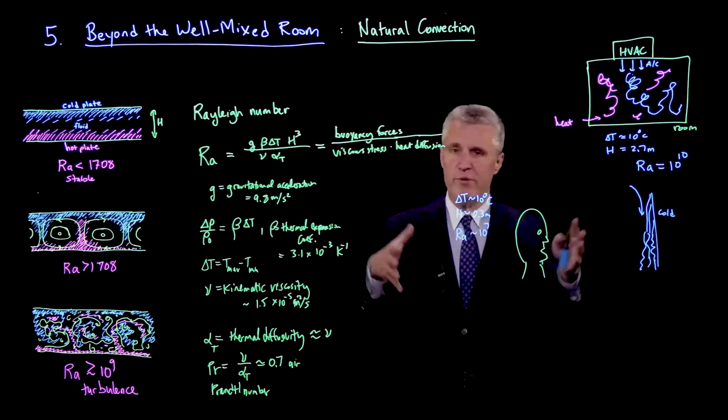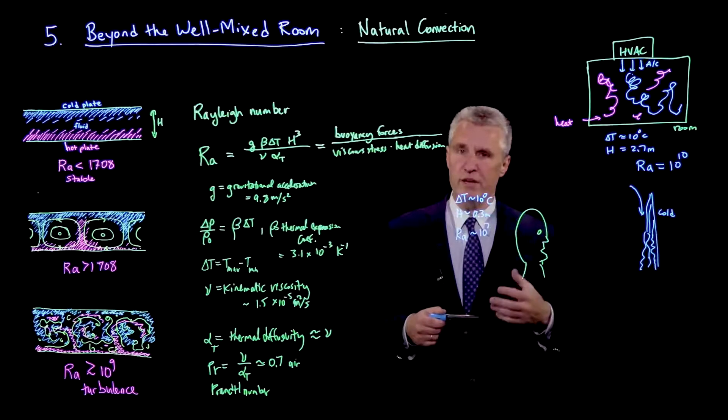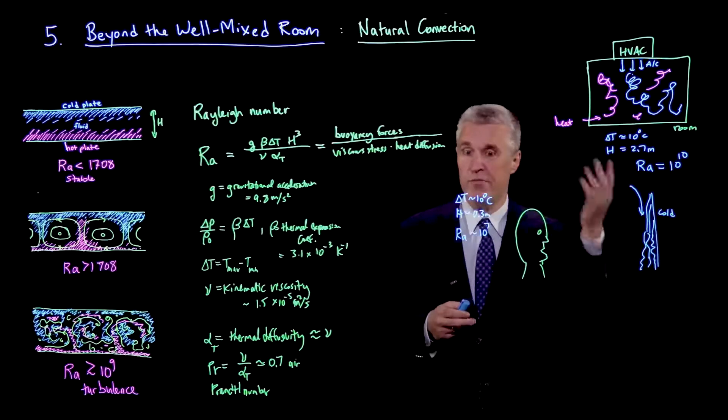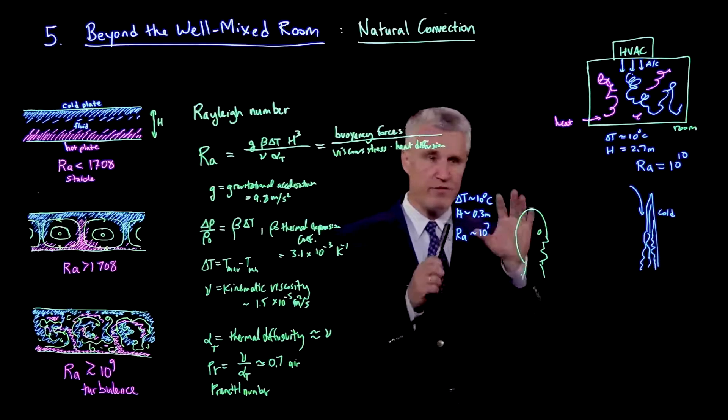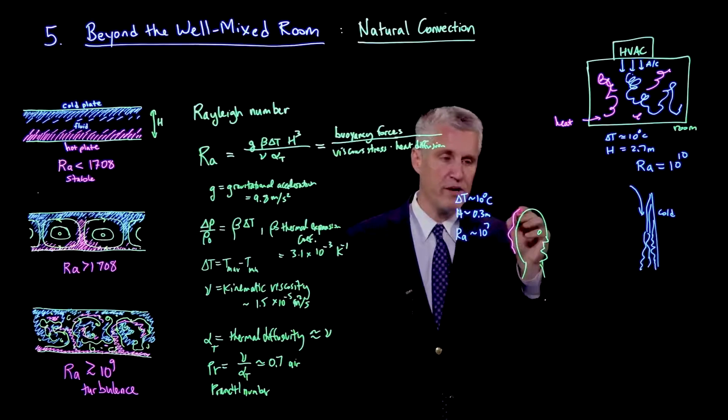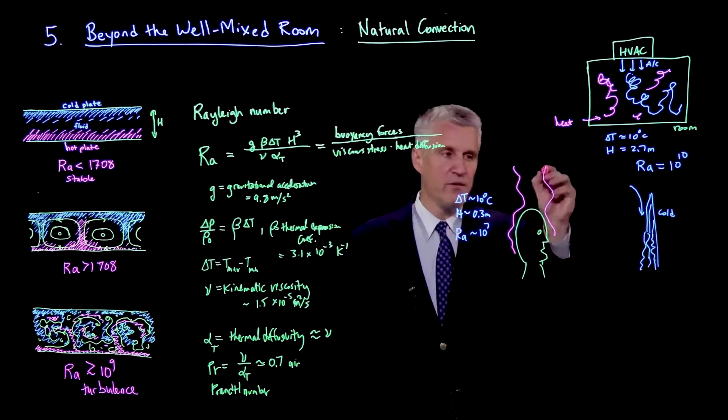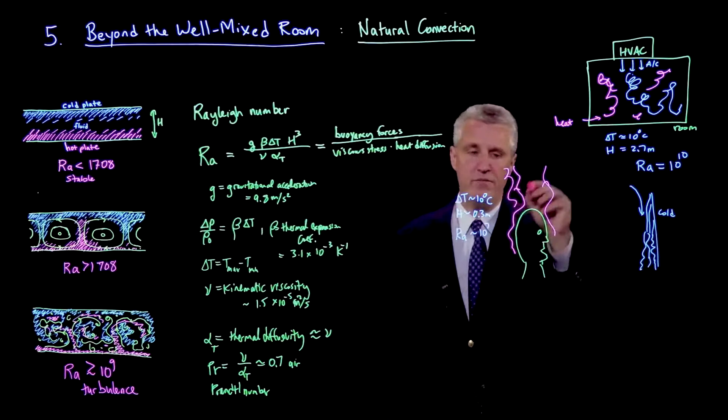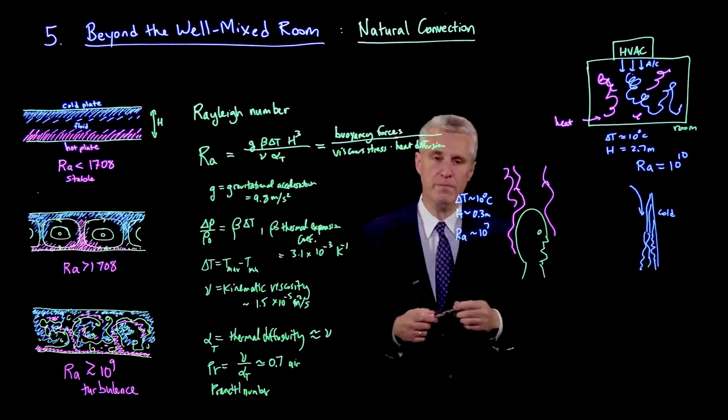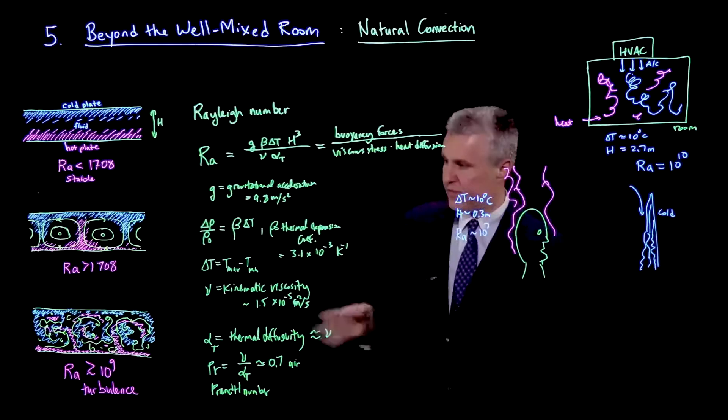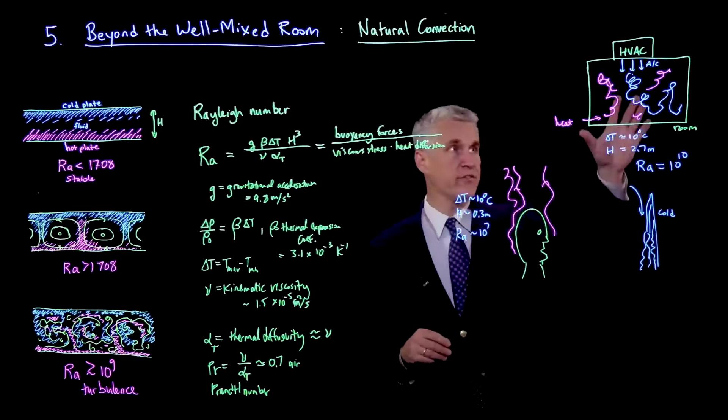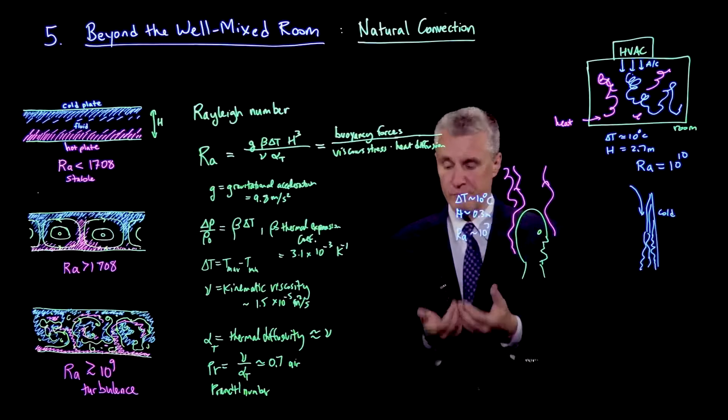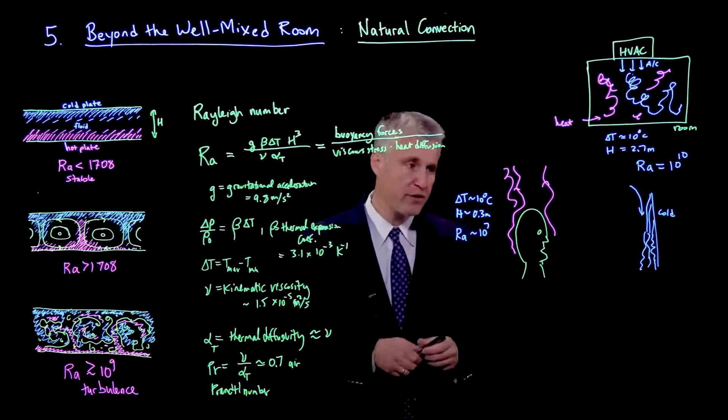So it may not be quite into the turbulent regime, but it's certainly in the regime where there'll be some unsteady complicated flows due only to natural convection. And we're not even talking about the person moving, which gives you even more flow. If you look closely, the air around a person is actually rising, almost like a chimney, driven by these thermal flows. And those flows even can go turbulent or at least generate some vortical structures.